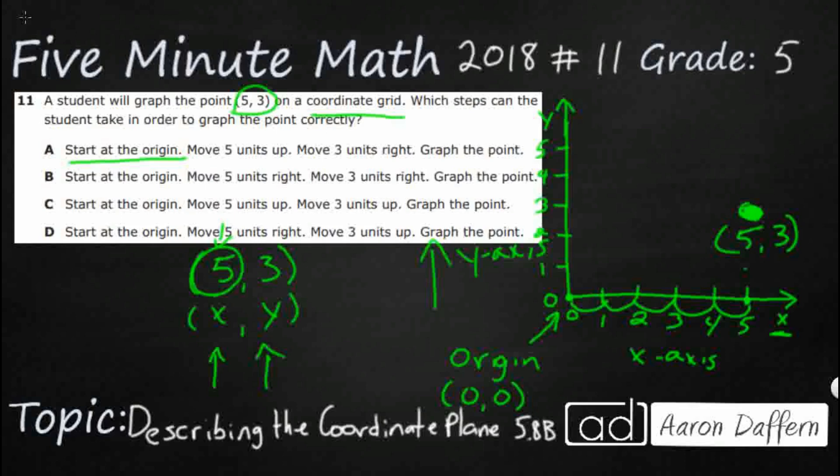Now what did we end up doing? We started at the origin. We did not move up first, so A is incorrect. We moved to the right first. B: started at the origin, move five units right - this is good. Move three units right - nope, that's incorrect. C: start at the origin, move five units up - incorrect. Let's hope it's D. Start at the origin, yes. Move five units right, yes. Move three units up, yes. There we go, our answer is D.